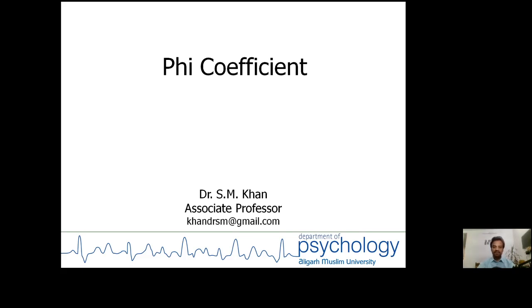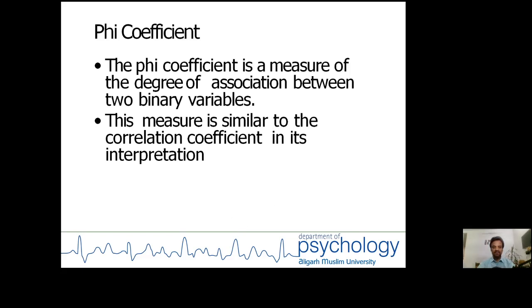To define Phi coefficient, it is a measure of the degree of association between two binary variables. Binary means it has two categories. This measure is similar to the correlation coefficient in its interpretation, as we are having in case of Karl Pearson correlation coefficient.